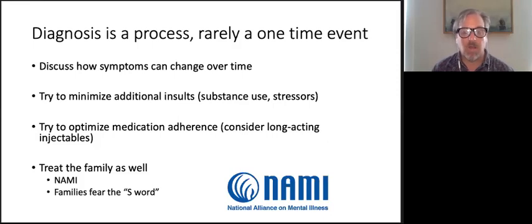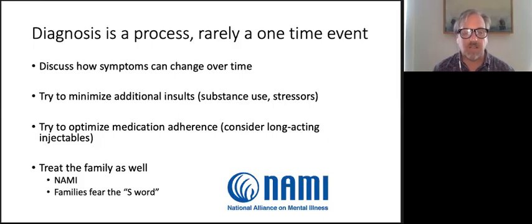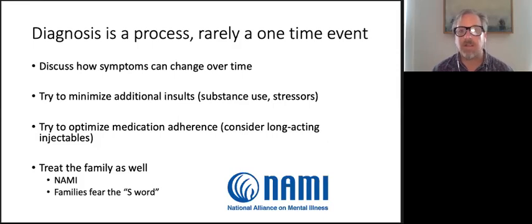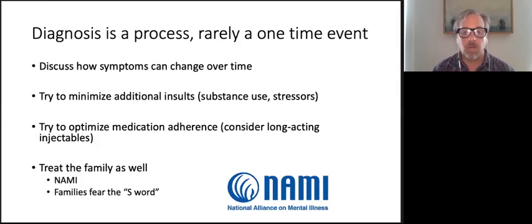We want to do everything we can early in the disease course to reduce stressors, provide additional supports, and get people on helpful medications. Long-acting injectable antipsychotics can be helpful — as one of my patients said, 'I only need to decide to take my medication once a month.' You also want to make sure you're treating the family and not just the patient. There's a wonderful national organization called the National Alliance on Mental Illness — NAMI — which has family courses, support groups, and a great program called Family to Family.